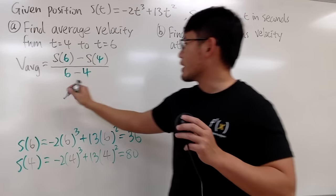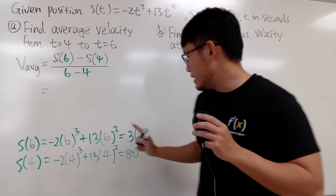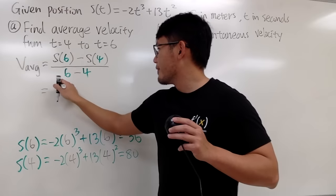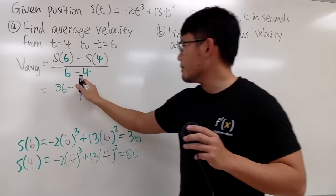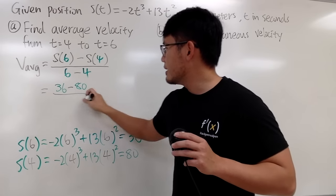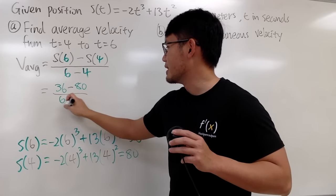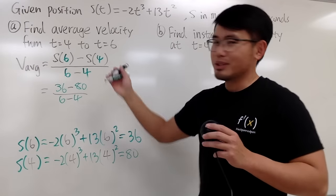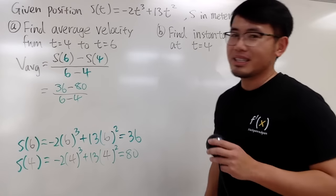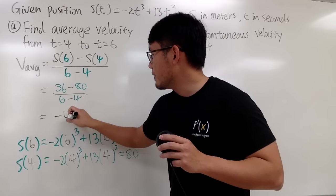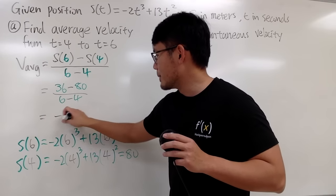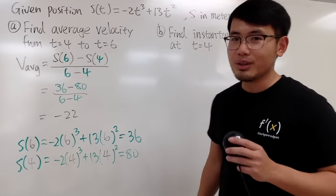Well, right here, we can come back. S of 6 is 36, and then we minus S of 4, which is 80, over 6 minus 4, which is of course 2. On the top, it's negative 44, on the bottom is 2, so altogether, you end up with negative 22. That's negative 44 divided by 2, so negative 22.